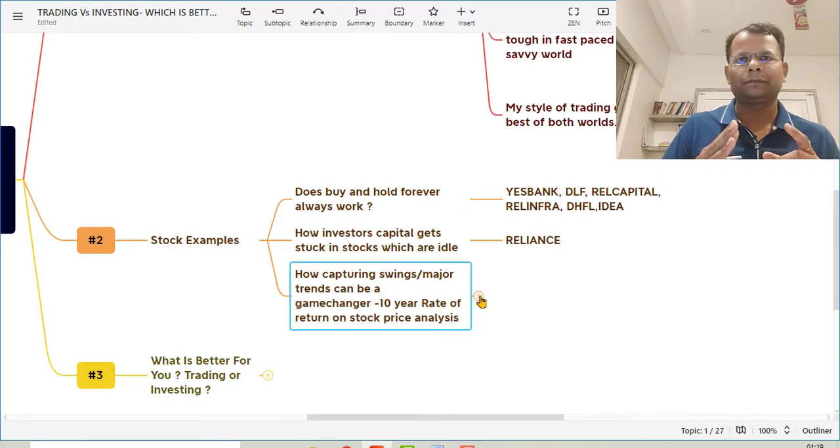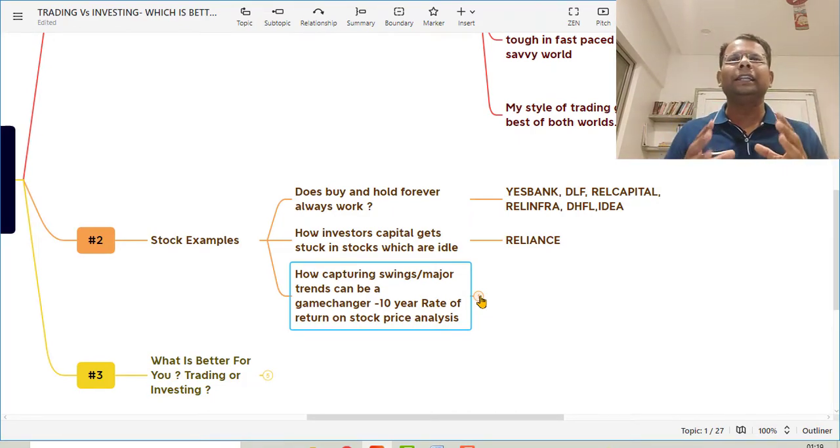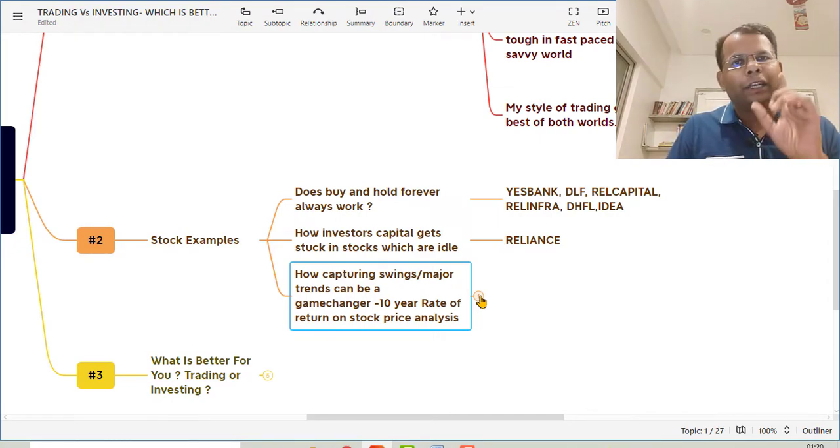And if you do the study of what is the average annual rate of return on the stock price of the top 50 companies which we call Nifty 50, which are India's top 50 companies, the major large capitalization companies, then you will find that if you just buy and hold these stocks, the average rate of return of these stocks on the basis of stock price is not more than 15 to 20 percent for most of these Nifty 50 companies.